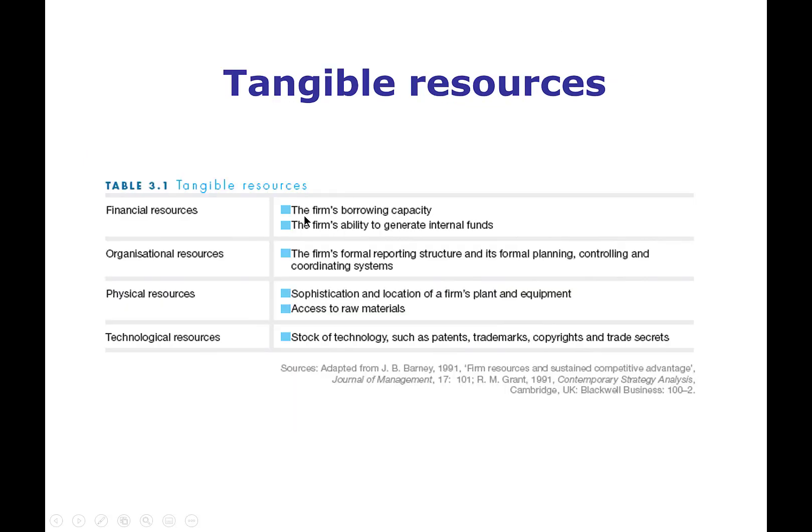A firm's tangible resources include financial resources — the ability to borrow, other sources of capital, the ability to generate internal funds; organizational resources — reporting structure, planning, controlling and coordinating systems, business processes; physical resources — the sophistication of the firm's plant and equipment, access to raw materials; and technological resources — things like patents, trademarks, copyrights, trade secrets, and technology.